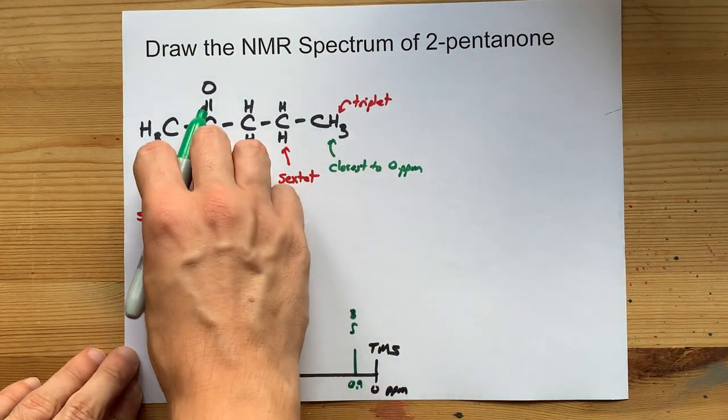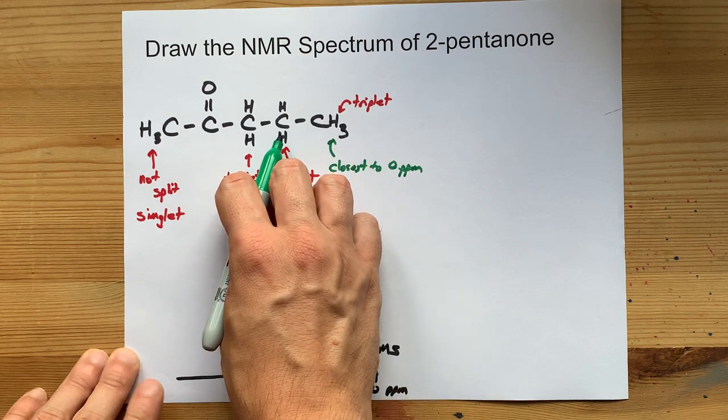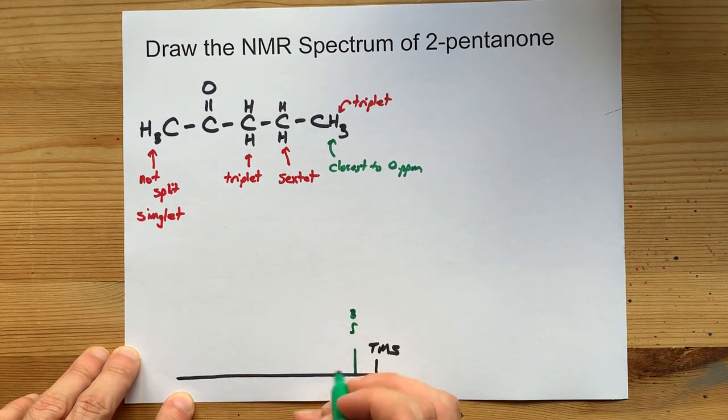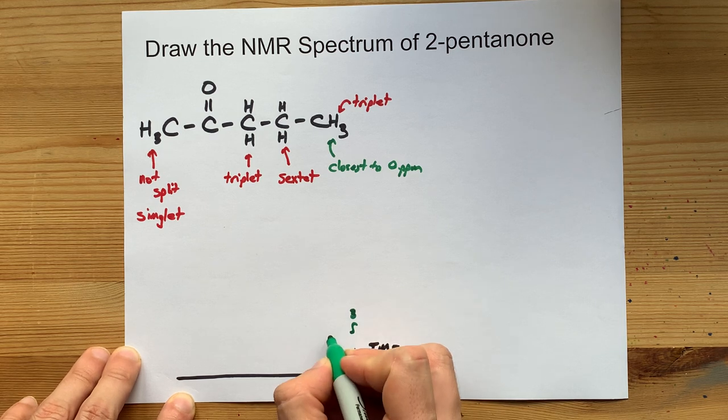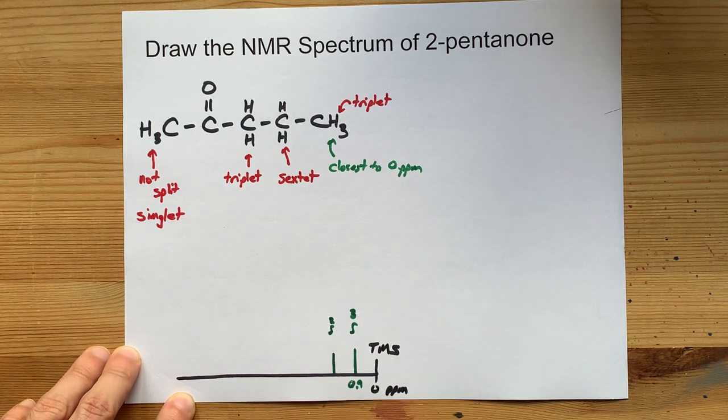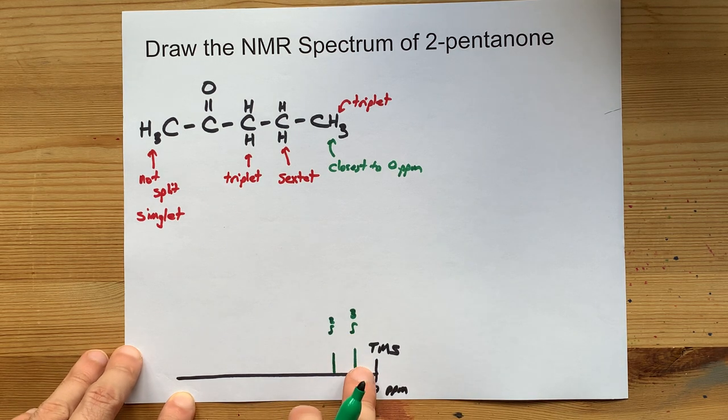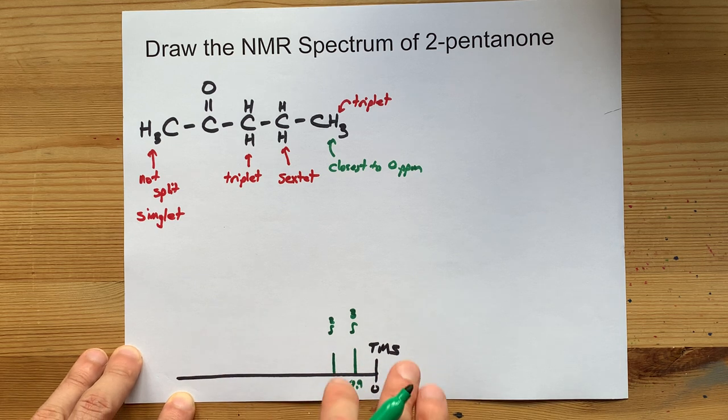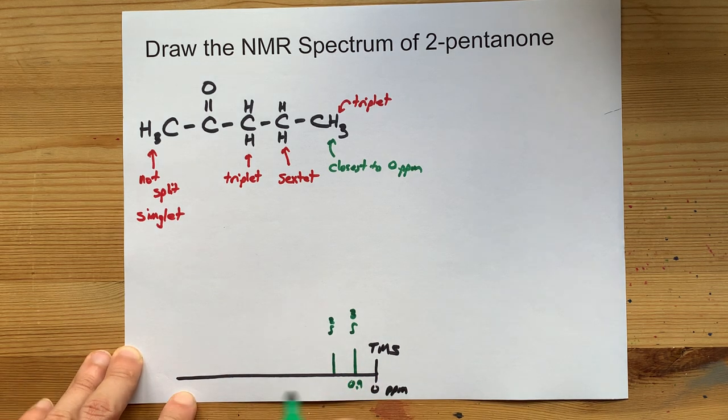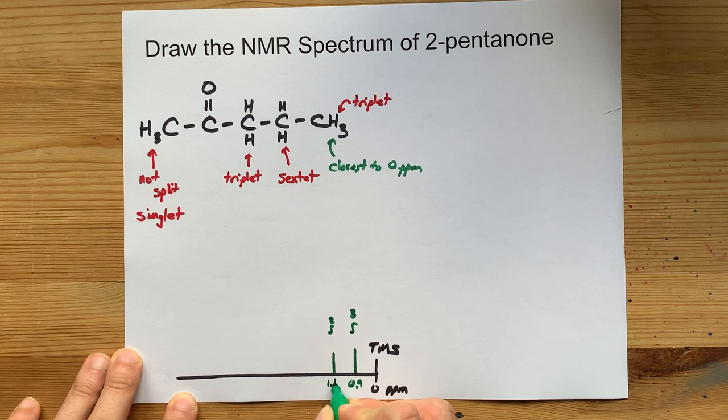The next furthest away from the electronegative atoms are these two. So go a little further bit down and give yourself a little integrated area of 2. Now, I'm not splitting these because this is a low-resolution NMR spectrum. Turns out that that ends up being about 1.6.